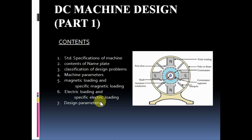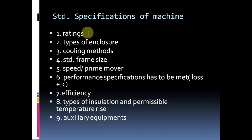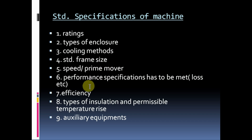Standard specifications of a machine are its ratings, types of enclosure, cooling methods, standard frame size, its speed and performance specifications that have to be met like losses, efficiency, types of insulation, permissible temperature rise, and also its augmentation.